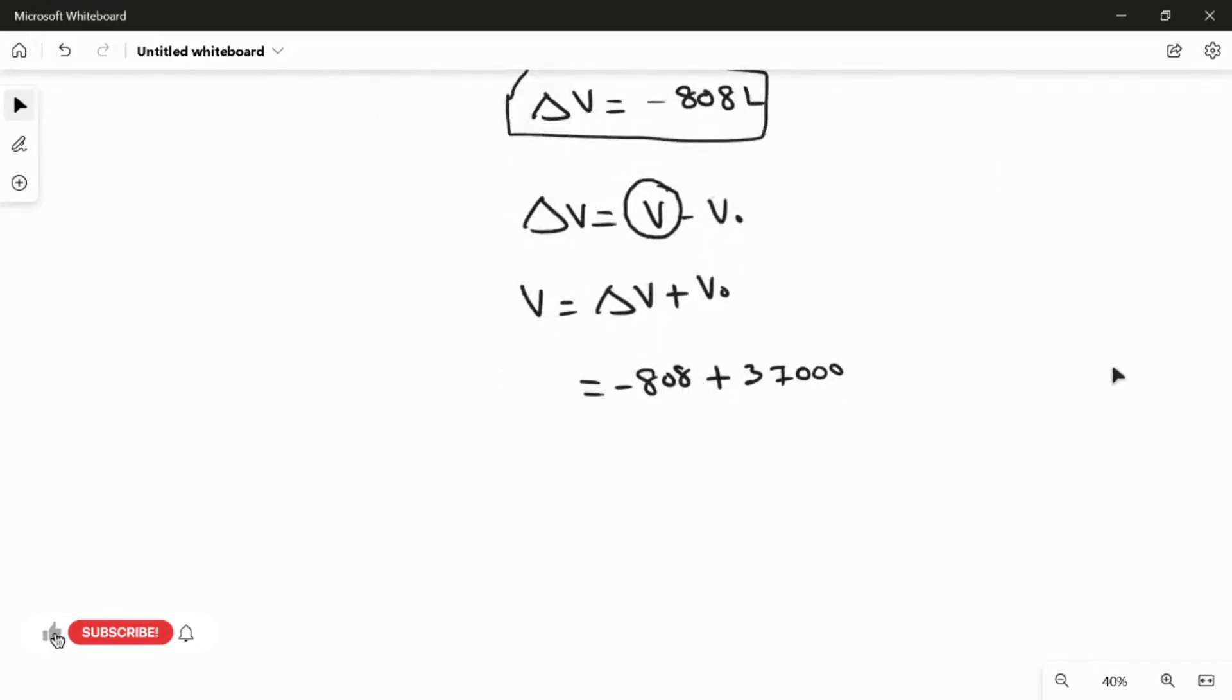So the amount of diesel fuel delivered is V, which equals 36,190 liters. This is the answer for this question. That's it. Thank you.